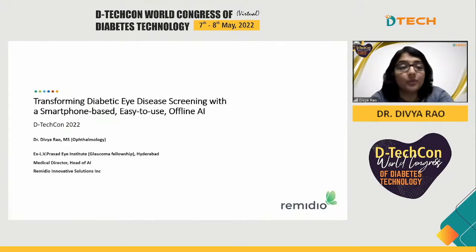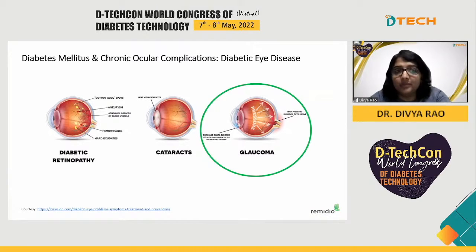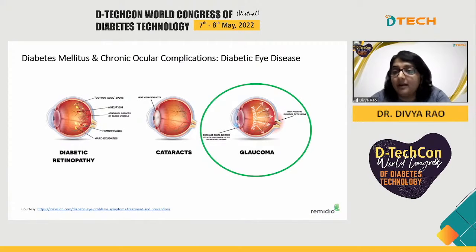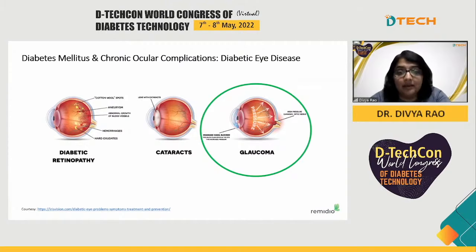What I'll be discussing today is how we are looking to transform diabetic eye disease screening with a smartphone-based, easy-to-use offline AI. Diabetic eye disease is a group of ocular conditions that affects those with diabetes, and this includes diabetic retinopathy, diabetic macular edema, cataracts, and glaucoma. We already have the world's first offline AI that can detect diabetic retinopathy on a portable handheld fundus camera, in use for the past two years. And now we have developed an AI solution that can also detect glaucoma.